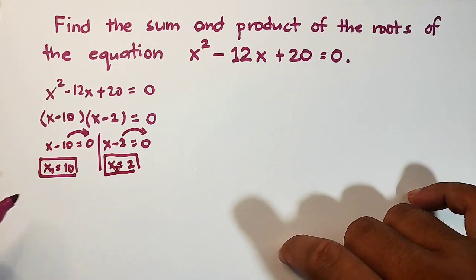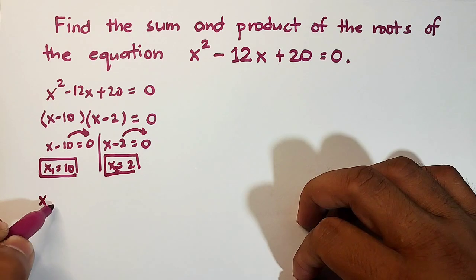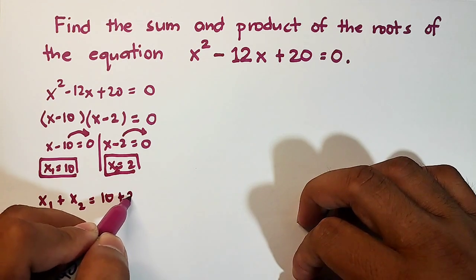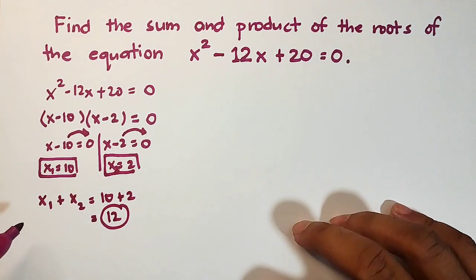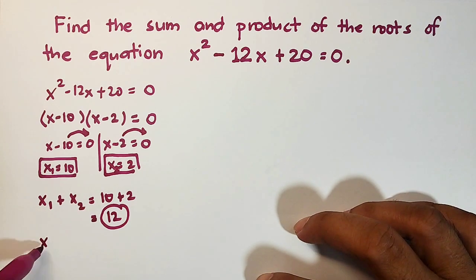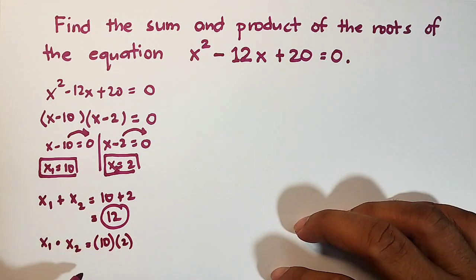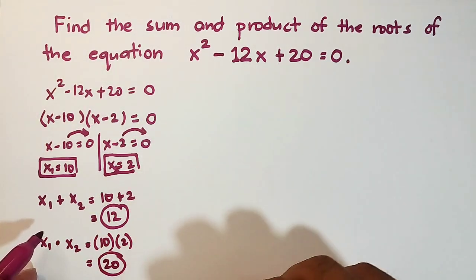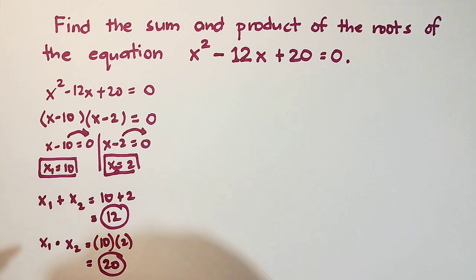Now let us find the sum of the roots. To find the sum, we add x sub 1 and x sub 2: 10 plus 2, so the sum is equal to 12. For the product of the roots, x sub 1 times x sub 2 is 10 times 2, which gives the answer of 20. This method involves manually solving for the value of x and then adding and multiplying the roots to get the sum and product.